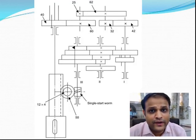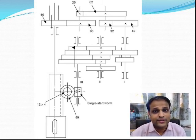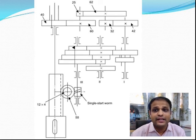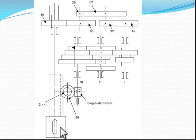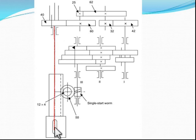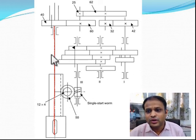In order to find the RPM of the third stage of the feed box, it is necessary to understand the entire gearing diagram. The most important part of this gearing diagram is the main axis — the axis on which lathe jobs will be turned. The tool path will ultimately be parallel to this axis.